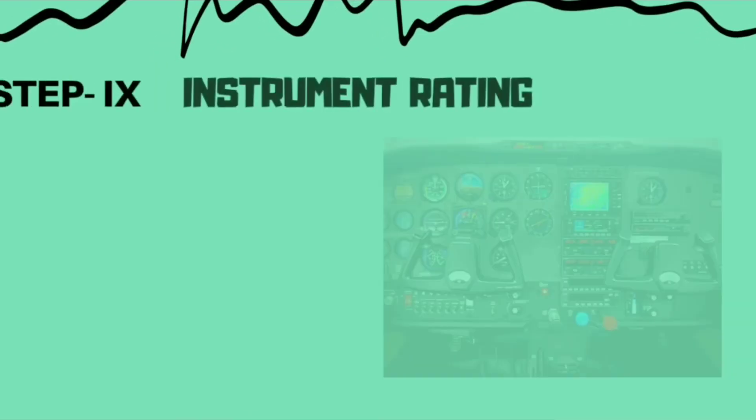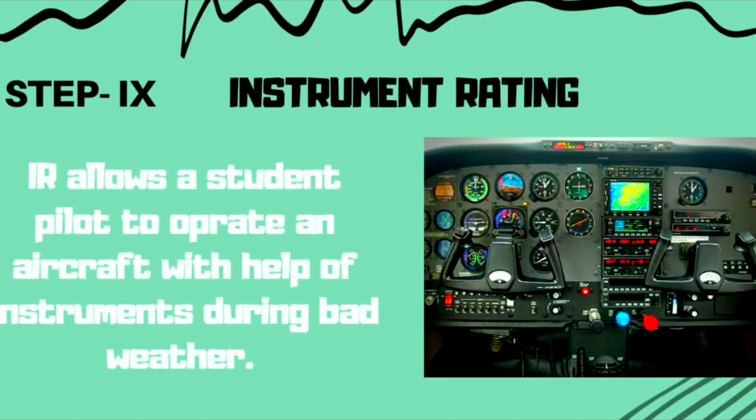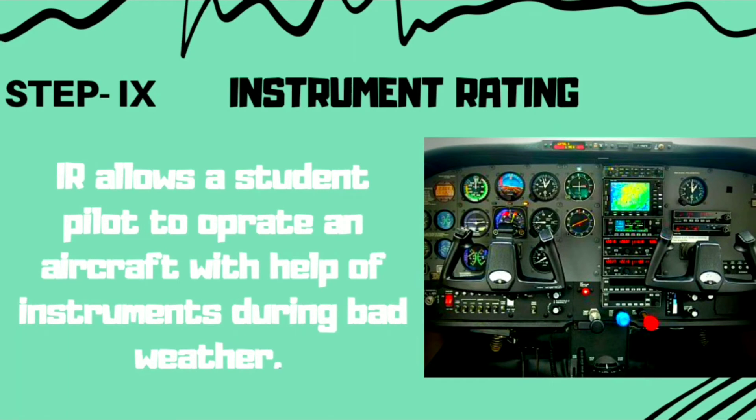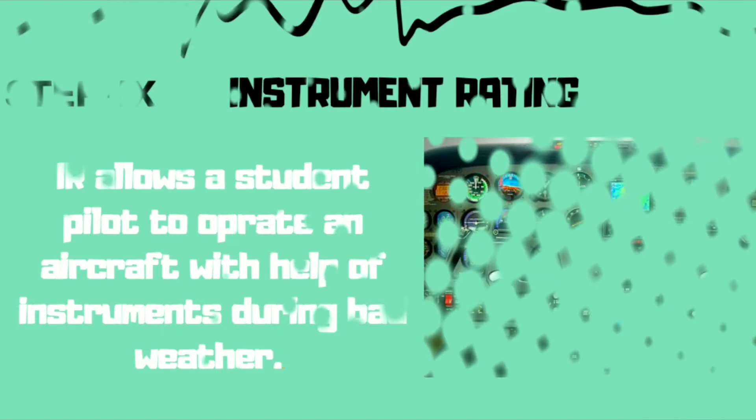Step number 9 is getting an instrument rating. Basically, it's an additional qualification that a student pilot must have in order to fly an aircraft with the help of instruments during bad weather.